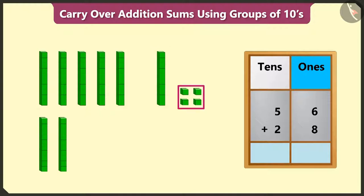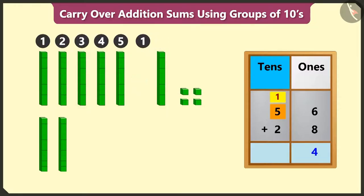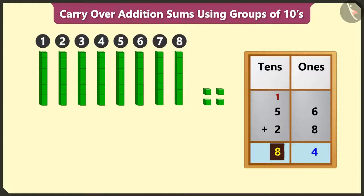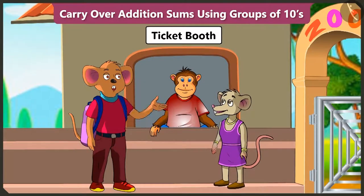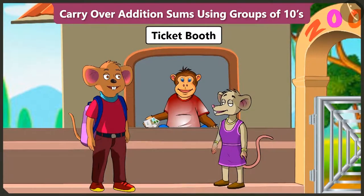Now adding 1 and 5 will make 6, and 6 added to 2 will make 8. Now 8 tens and 4 ones, which means we have to give 84 rupees. Perfect answer! Please take 84 rupees. Take your ticket, let's go inside.